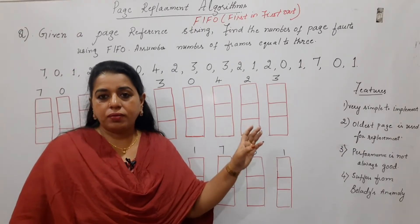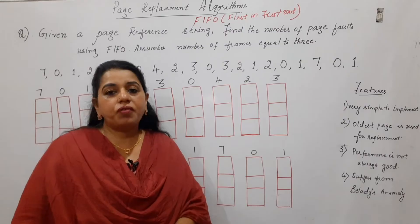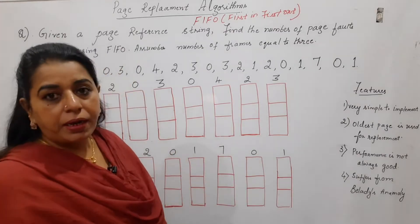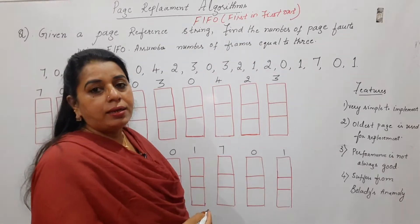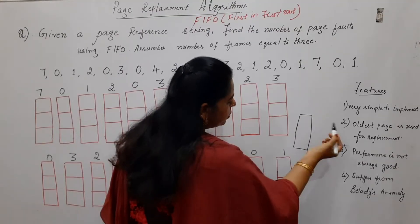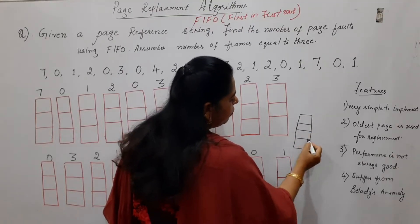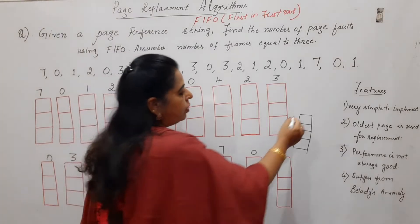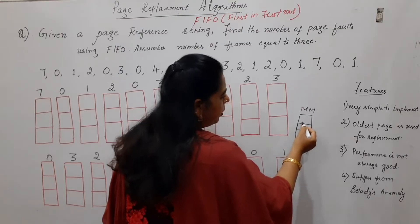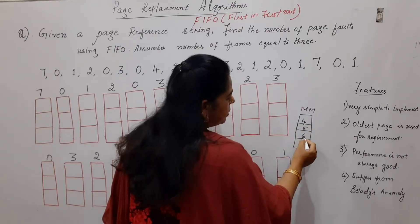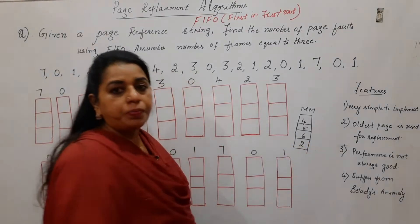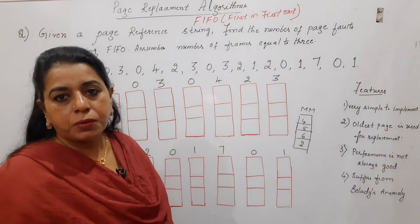I thought of starting with FIFO — First In, First Out. The page replacement concept I have explained in my previous session, but I will just make you recall that. Normally in the main memory, suppose just for simplicity, we will take only four frames existing in the main memory or physical memory, and pages are already stored — say page number 4, 5, 6, and 2 of a particular process.